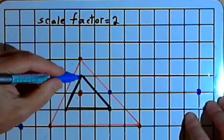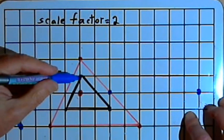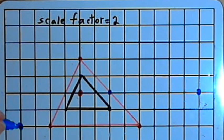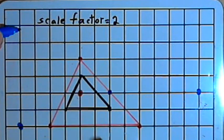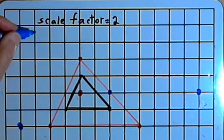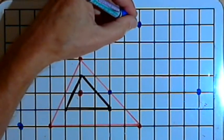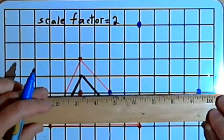And then for the angle at the top, I have to go three units up and four units to the right from the center of dilation. So the dilation will take me six units up and eight units to the right. Now I've got the three angles for my triangle, and I can connect those. So I'll make this a blue triangle.